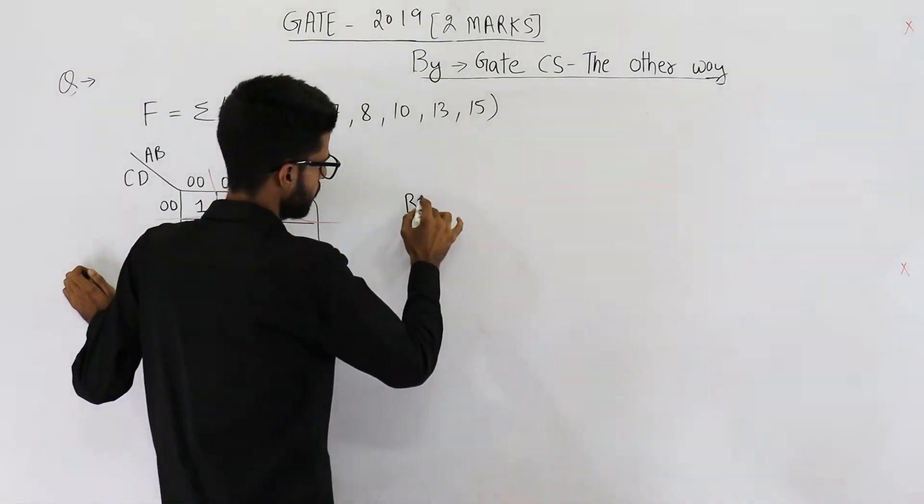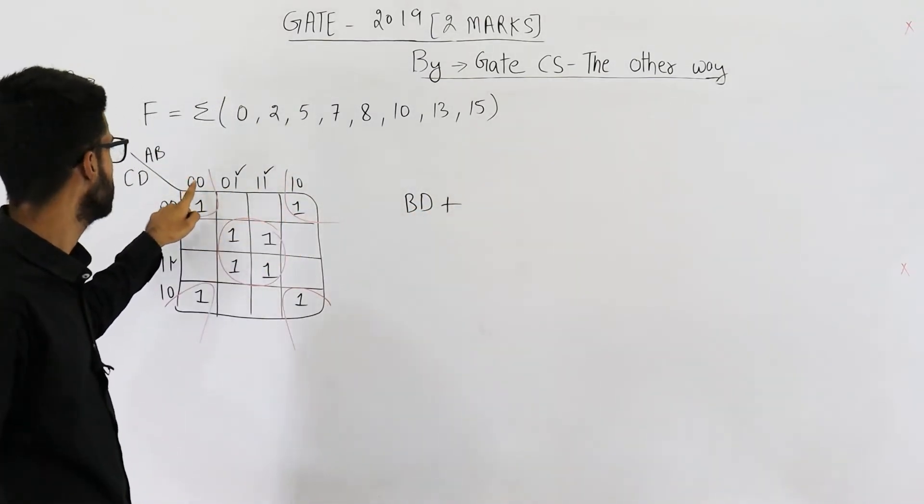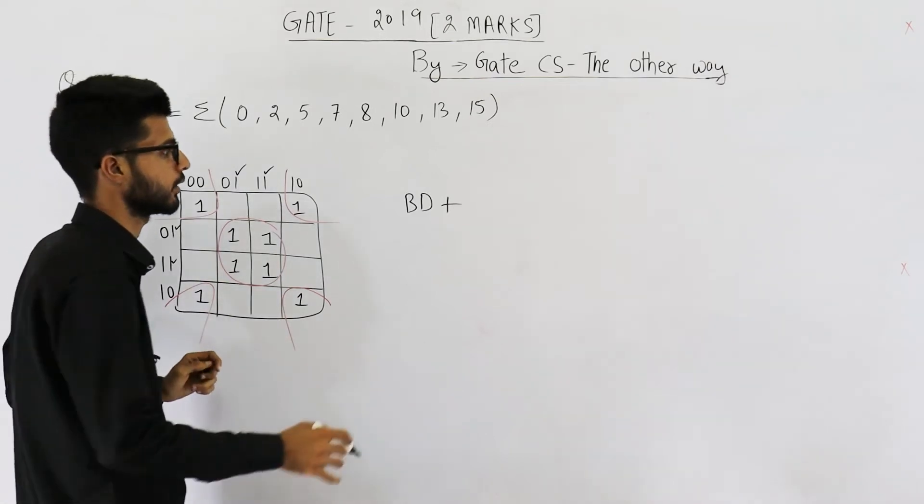So BD plus. For this one, it will be B bar D bar.